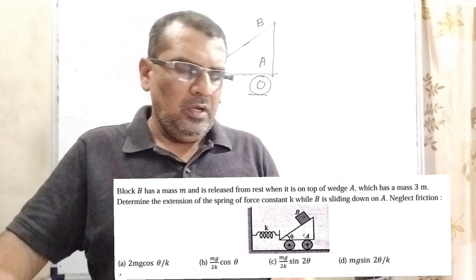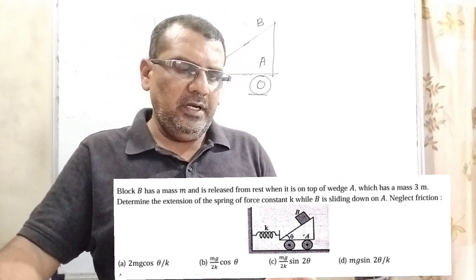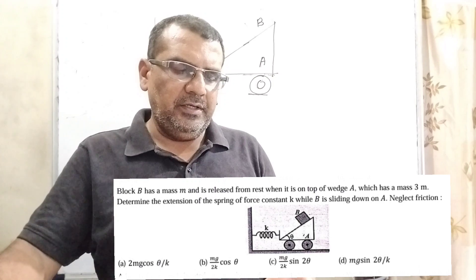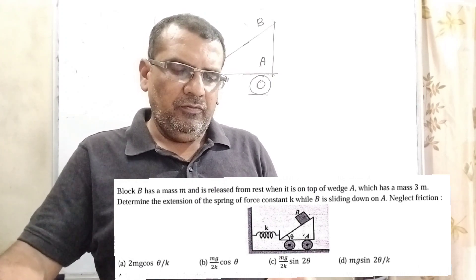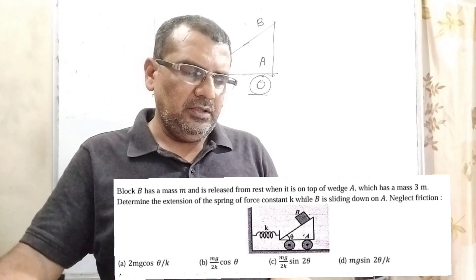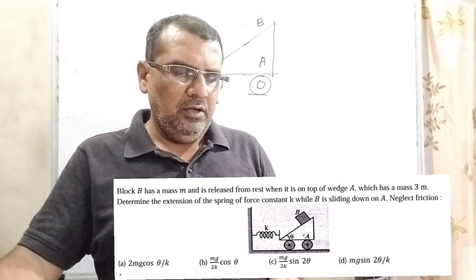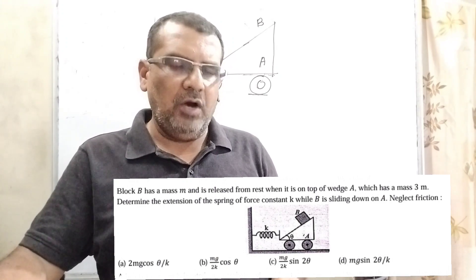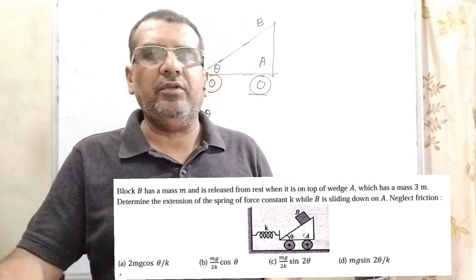Here is the question. Block B has a mass M and is released from rest when it is on top of wedge A, which has a mass 3M. Determine the extension of the spring of force constant K while B is sliding down on A. Neglect friction. Here we have given four options.